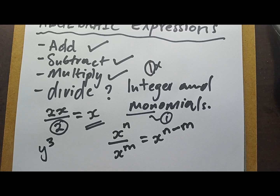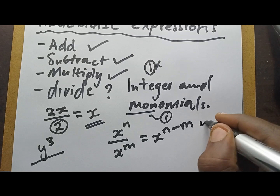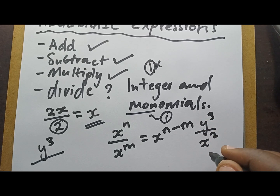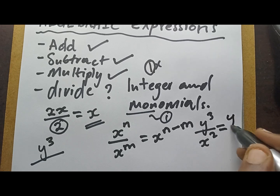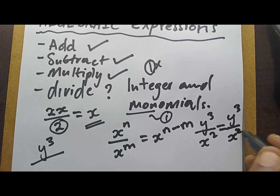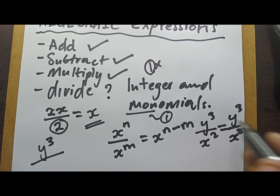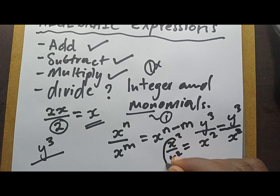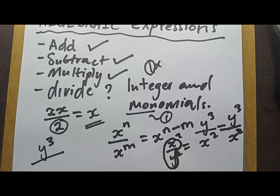Let's say you have y to the power of 3 divided by x squared. Do you see what I see? There's nothing you can do here — the letters are not the same, which means this will remain the same. It doesn't matter even if the exponents are the same. Even if you have x squared divided by y squared, there's nothing you can do. This rule works only if you have terms with the same letters.